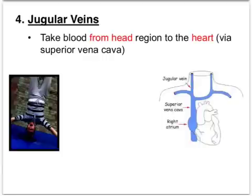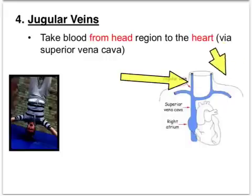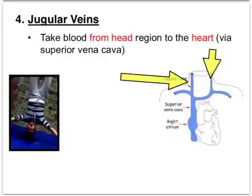Running alongside the carotid arteries are the jugular veins. Their job is to take blood from the head region back down towards the heart, where it meets the superior vena cava. There are two jugular veins. Interestingly, they don't contain valves like most other veins because they rely on gravity to bring blood back down. Standing on your head causes pooling since the neck muscles must work harder.